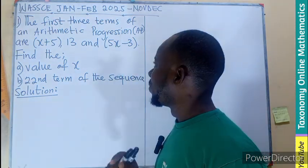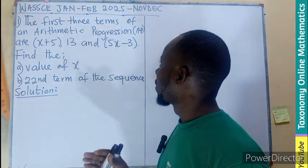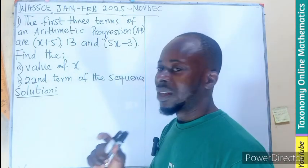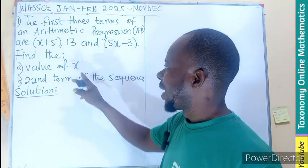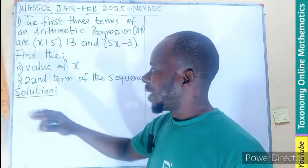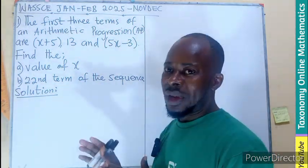The first three terms of an arithmetic progression AP are given as x plus 5, 13, and 5x minus 3. We have to find the value of x in there and the 22nd term of the sequence.